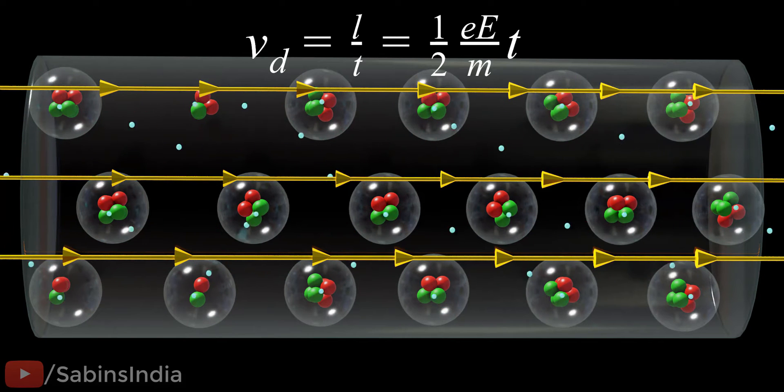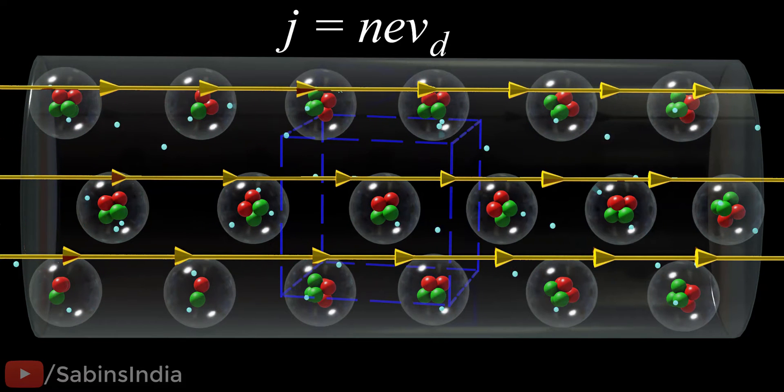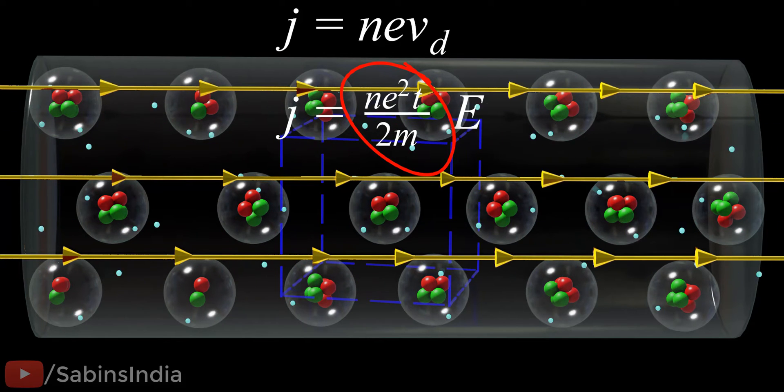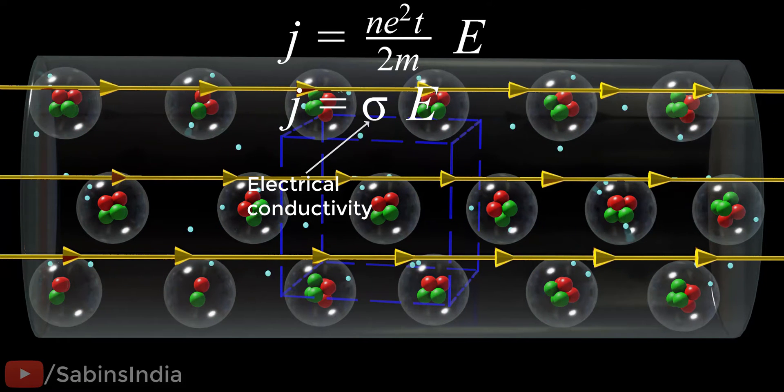If we assume there are n free electrons per cubic volume of the conductor, current flow per area can be deduced as follows. Note that all the variables in this red circle are properties of a material which varies only with temperature. Let's group these properties together and form a new property. This property is known as electrical conductivity.